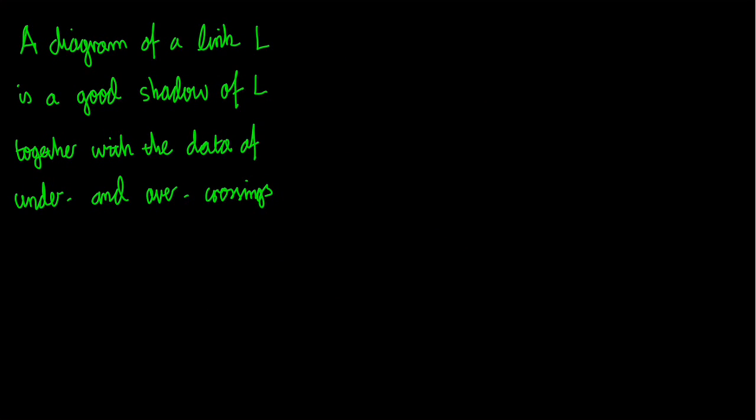Here from the notes is the definition of diagram. A diagram of a link L is a good shadow of L together with the data of under and over crossings. What do these words mean? What's a shadow? What's a good one? And what's this data? That's what I'll tell you just now.